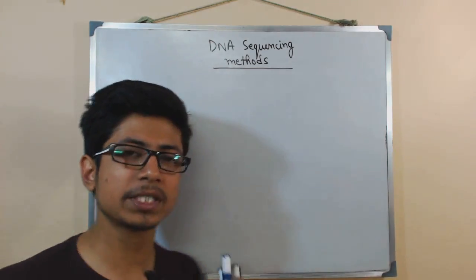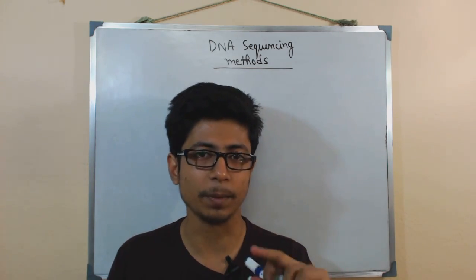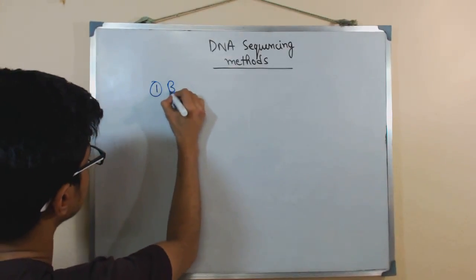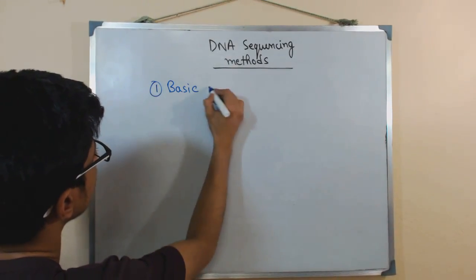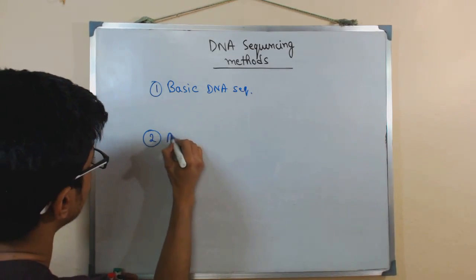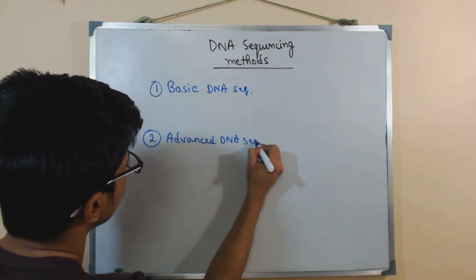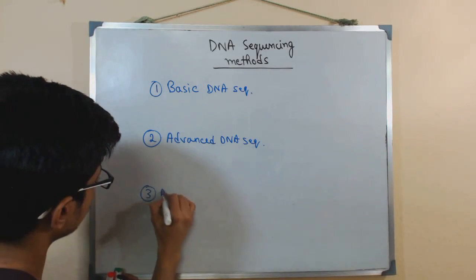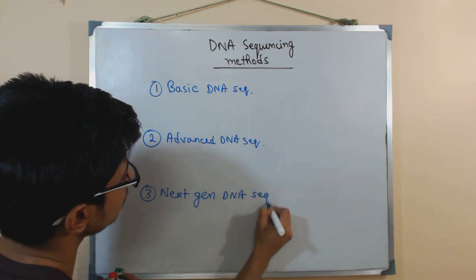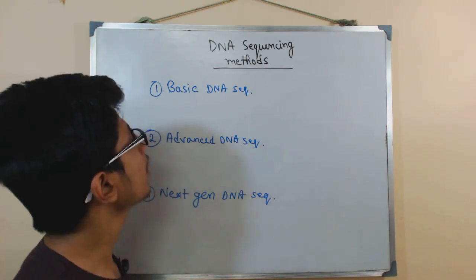The DNA sequencing methods I'll divide into three different sections: the first is basic DNA sequencing, the second is advanced DNA sequencing, and the third is next-generation DNA sequencing. These are the three different types of DNA sequencing we are going to talk about in this video.